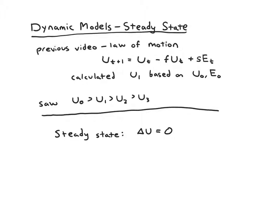Using this law of motion, we can calculate the future values of u based on previous values of u. For instance, we calculated u1 based on u0 and e0, and we actually did that for a whole series of u.